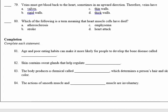Number 81: age and poor habits can make it more likely for people to develop the bone disease called osteoporosis. Osteoporosis means the bones are porous and easily breakable.